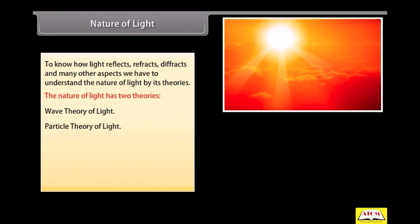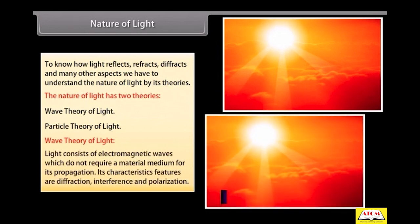Wave theory of light. Light consists of electromagnetic waves which do not require a material medium for its propagation. Its characteristic features are diffraction, interference, and polarization.